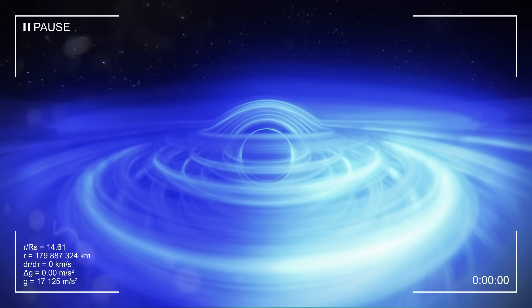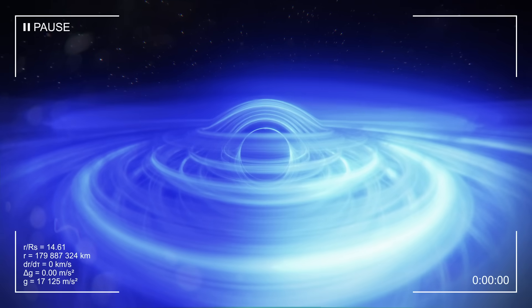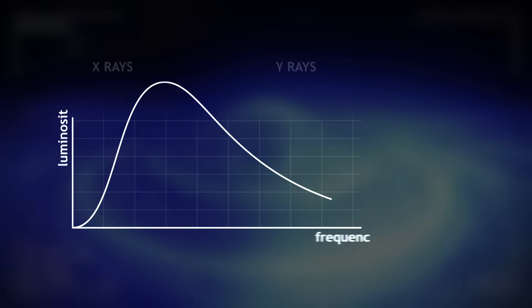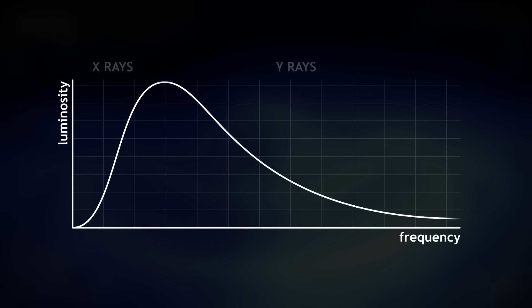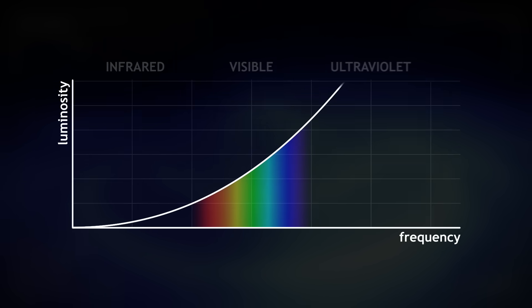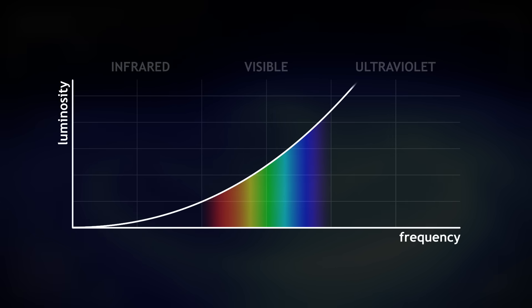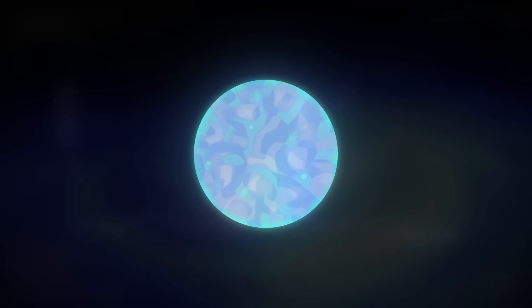At first, we notice that the disk is blue. Within the whole electromagnetic spectrum produced, our visor filters everything but visible light, the light our eyes can see. In this spectrum, the disk emits more blue because this color is more energetic. It is the same effect that gives very hot stars a bluish tint.